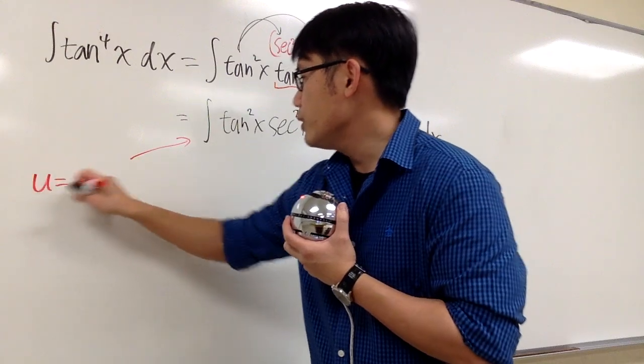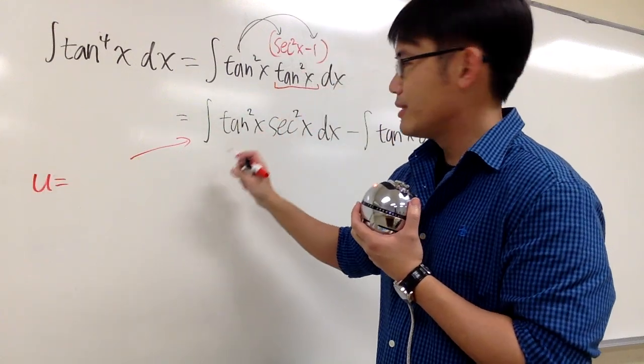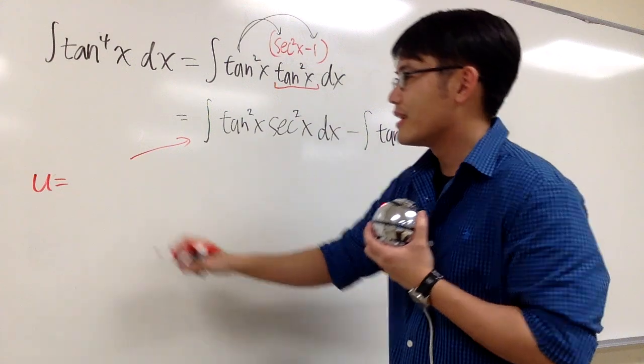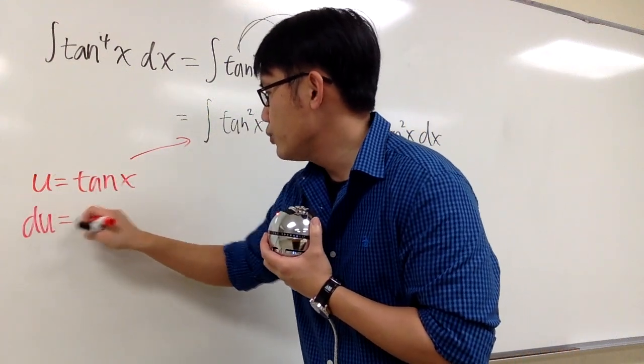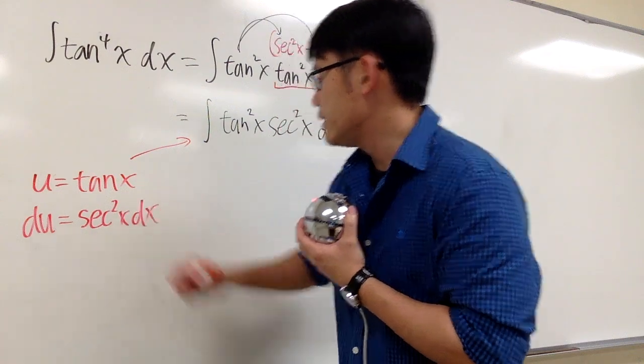Let me just say that u equals to tangent. Because right here, this is the expression in terms of tangent. u is equal to tangent x, so we can differentiate both sides. du will be secant square x dx.